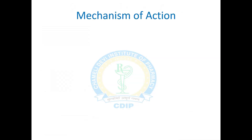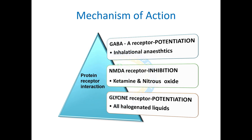Regarding the mechanism of action of these drugs: all are protein receptor-interacting agents, acting on three types of receptors — GABA-A, NMDA, and glycine receptors. Inhalation anaesthetics majorly potentiate GABA-A receptors, meaning they potentiate the opening of chloride ion channels, thereby producing the anaesthetic effect. Glycine receptor potentiation is achieved with halogenated liquids, while NMDA receptor inhibition occurs through ketamine and nitrous oxide.